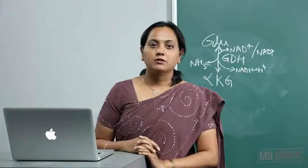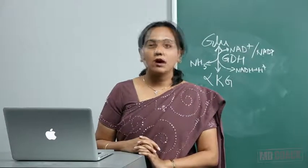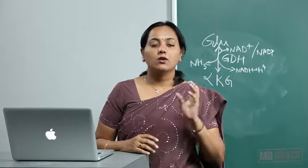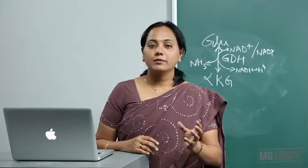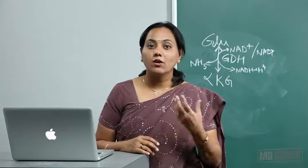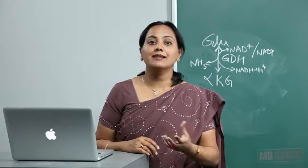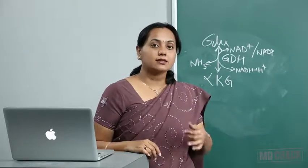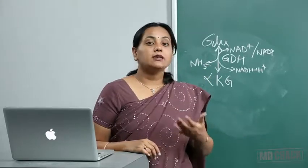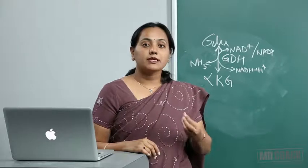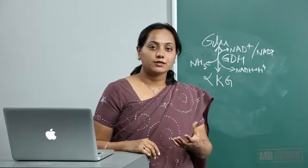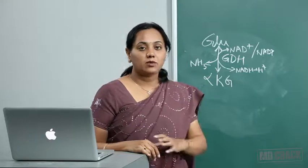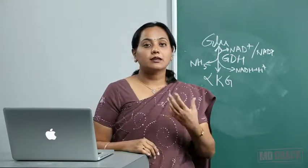Welcome back students. In the last session we saw how ammonia is removed from all the different amino acids — it goes to glutamate, and glutamate undergoes oxidative deamination and releases its ammonia. This ammonia is released in the liver mitochondria by the enzyme glutamate dehydrogenase. So this is one mechanism by which ammonia is formed in the body.